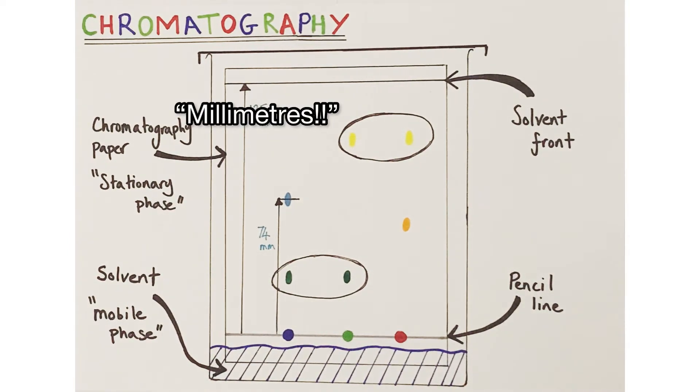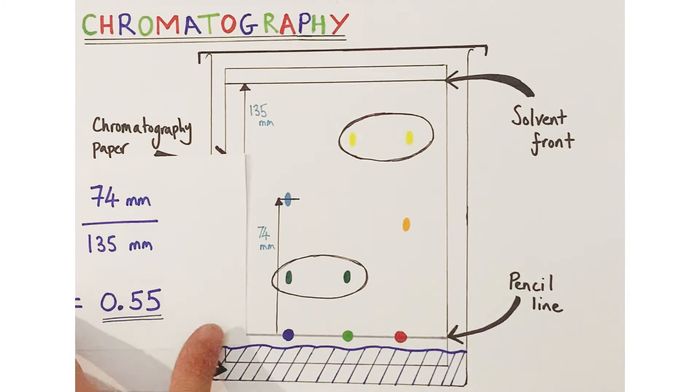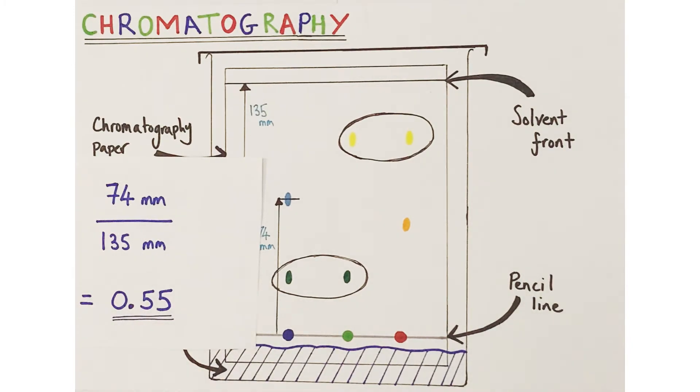Then to calculate the RF value, all you do is you divide that distance traveled by the pigment, 74 millimeters in this particular example, divided by the distance traveled by the solvent itself, 135 millimeters in this example. That would give us a numerical value for the retention factor or RF value of 0.55.